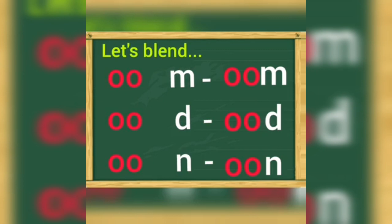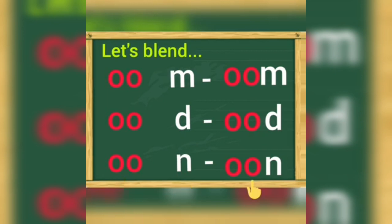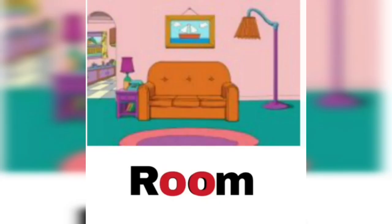Next, we will blend the long OO sound with some consonants. Children, repeat after me. OO-M: OOM. OO-D: OOD. OO-N: OON. Let's have a look at the long OO words. Read after me.